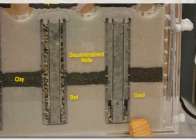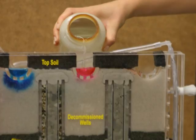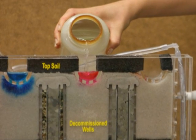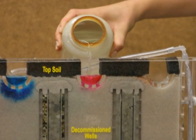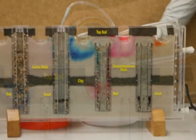We will add dye to the model to represent a contamination source. Additional water will be added to represent precipitation, and we will pump an active well in close proximity to the decommissioned wells. As the well is pumped, recharge water is pulled towards the well from all directions.